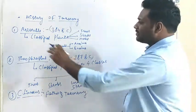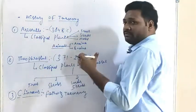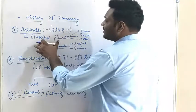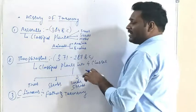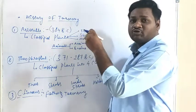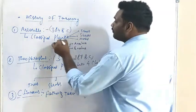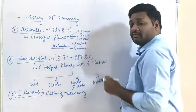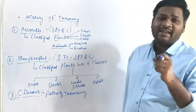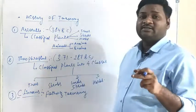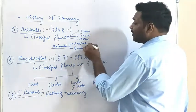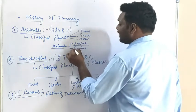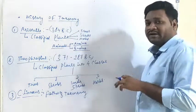As we have already discussed, the first biological classification was given by Aristotle in 54 BC. He classified living organisms into plants and animals. Plants are classified into three main types: trees, shrubs and herbs. While animals are classified into two main categories: animals with red blood cells and animals without red blood cells.